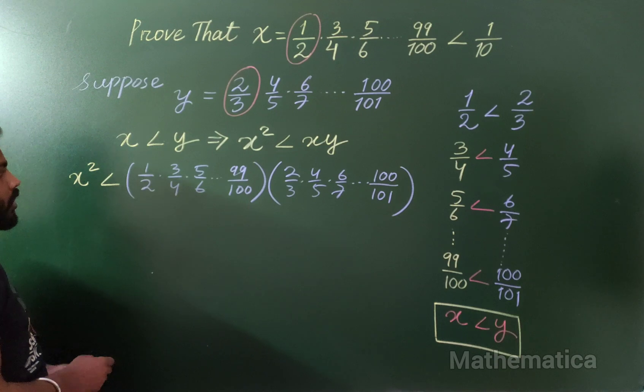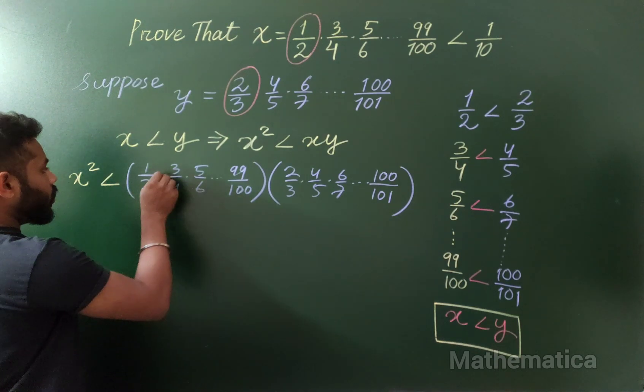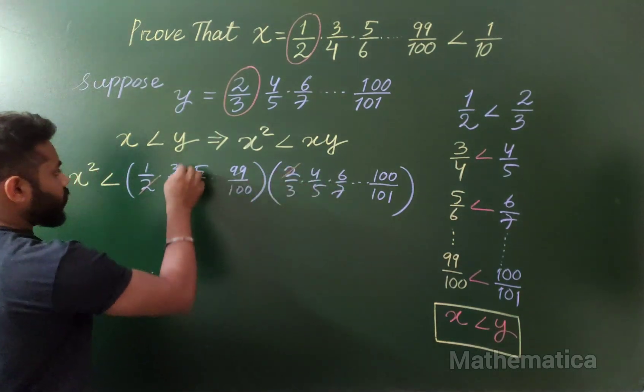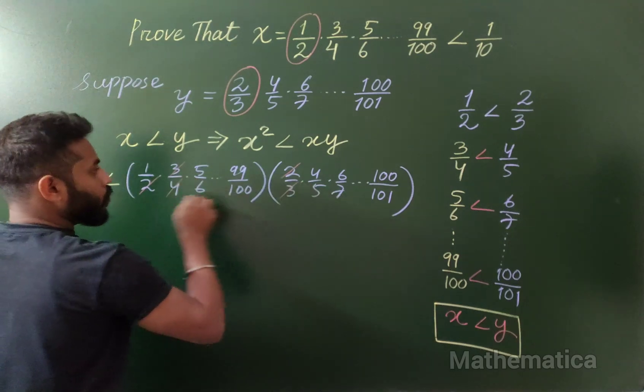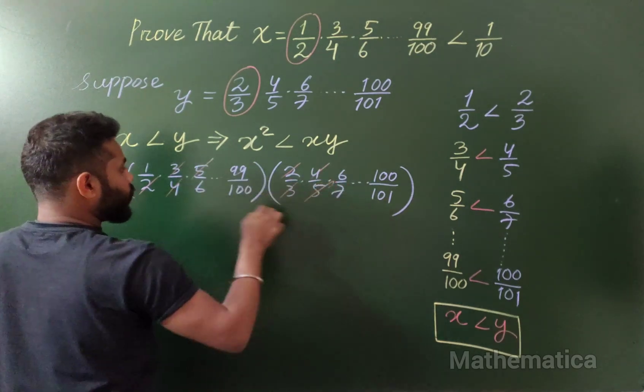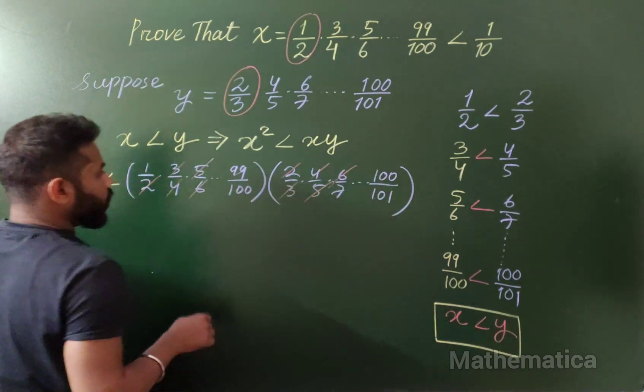If you notice here, surprisingly, all the terms are cancelling with each other: 3 with 3, 4 with 4, 5 with 5, 6 with 6, all the way.